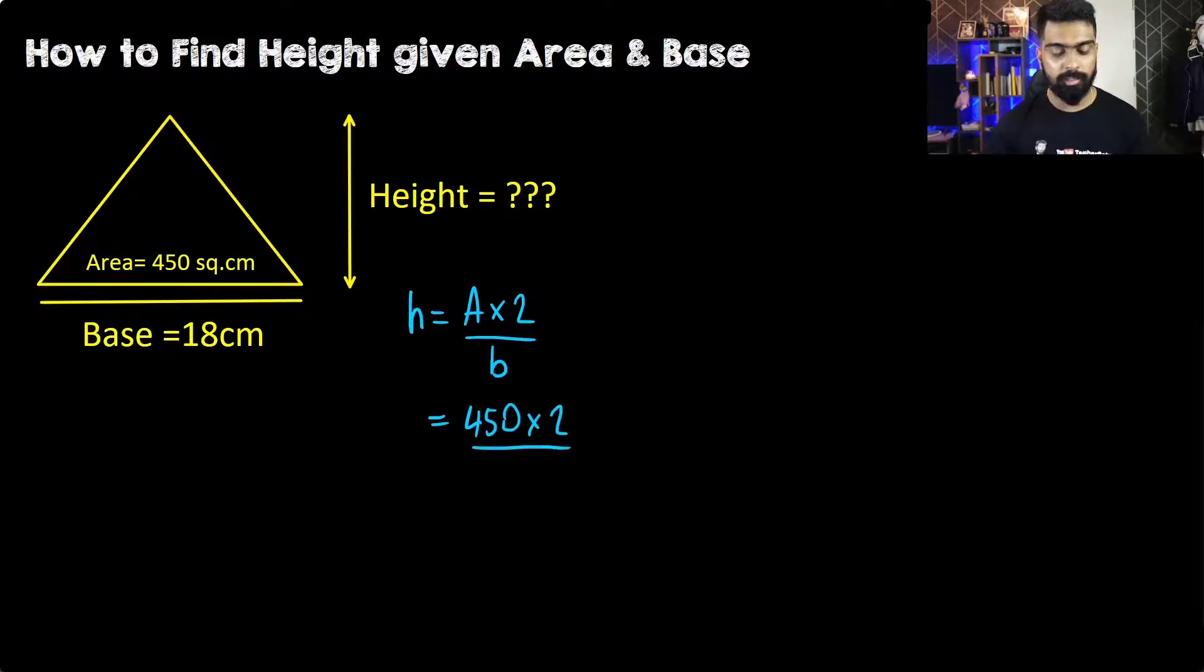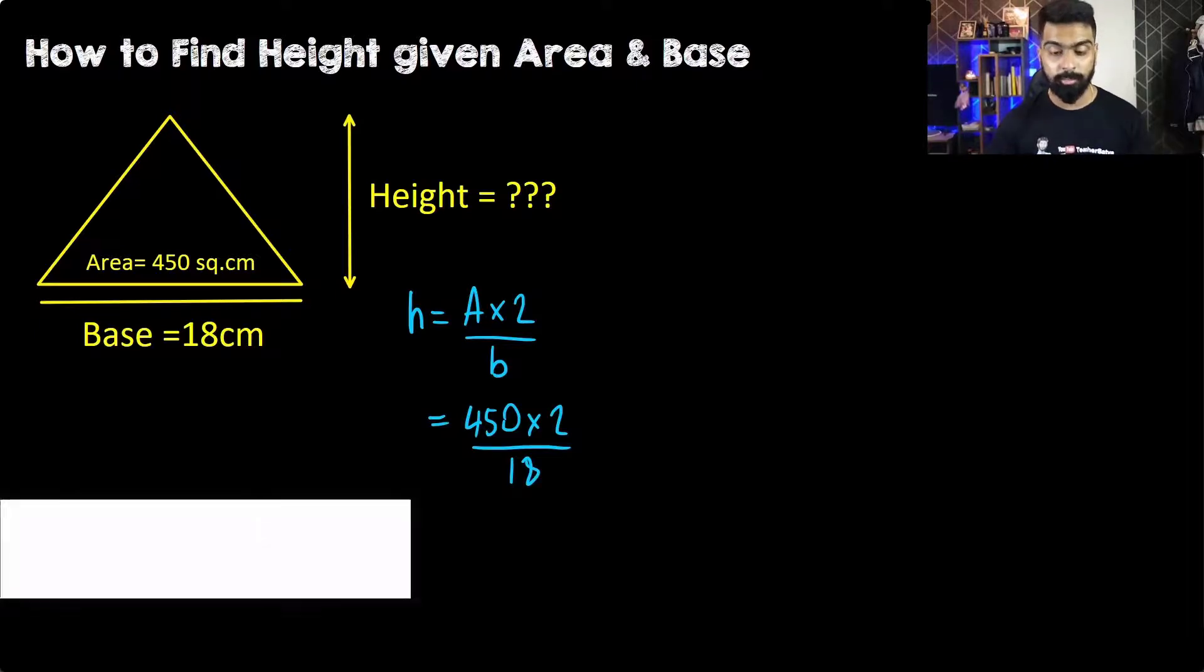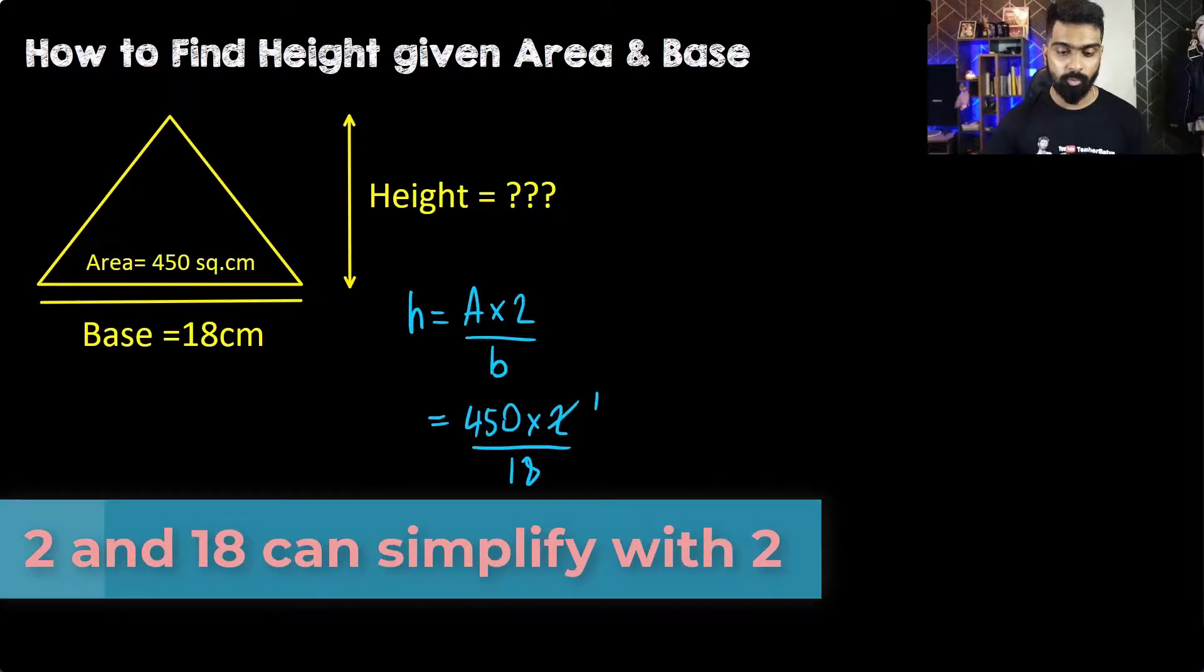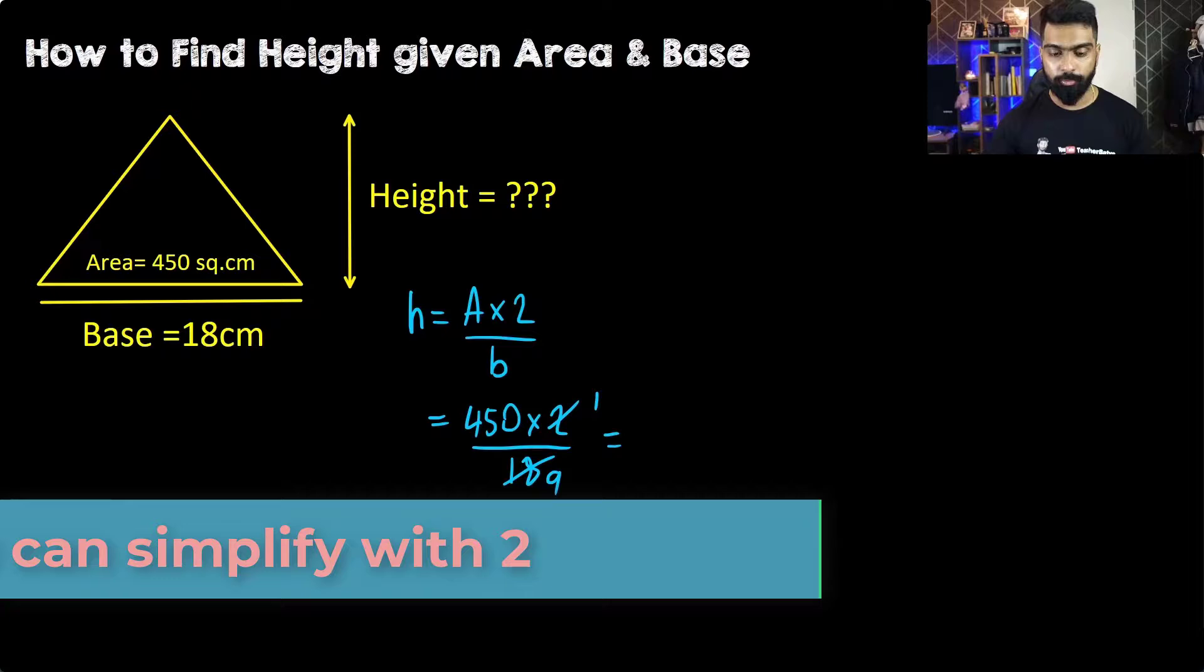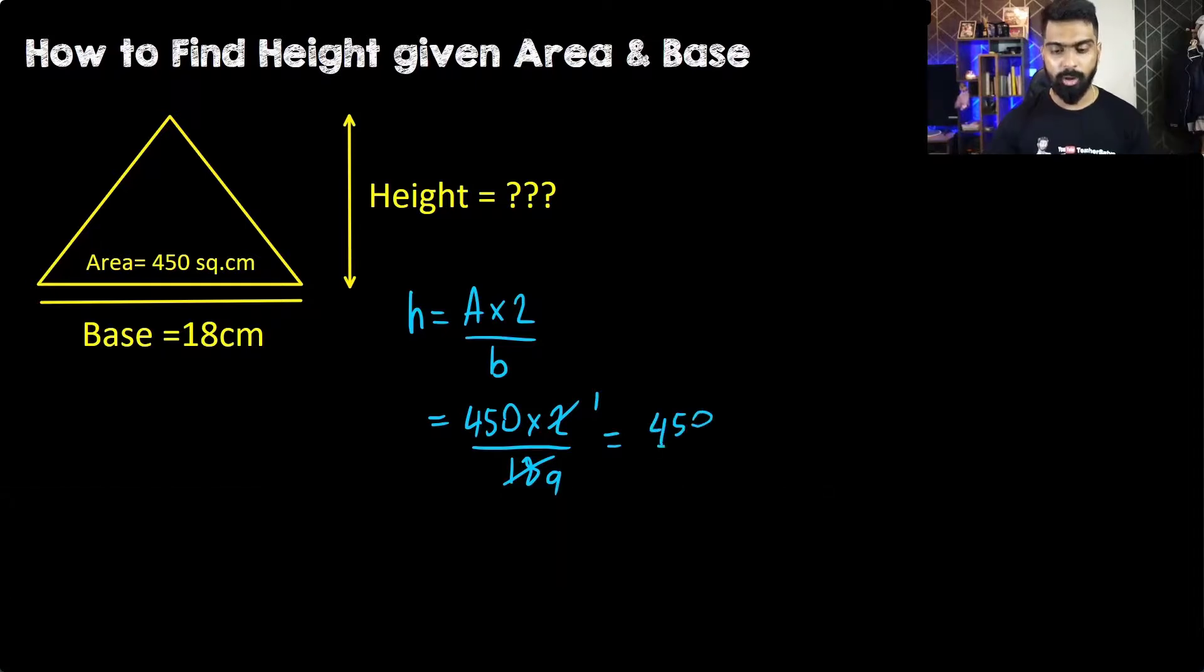As you can see, 2 and 18 can easily simplify. 2 will change to 1 and 18 will change to 9. Now 450 divided by 9 equals 50 centimeters. Really easy, isn't it? And that's how we find the height of a triangle when its area and base are given.